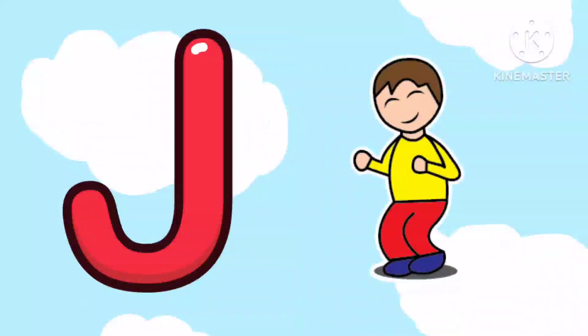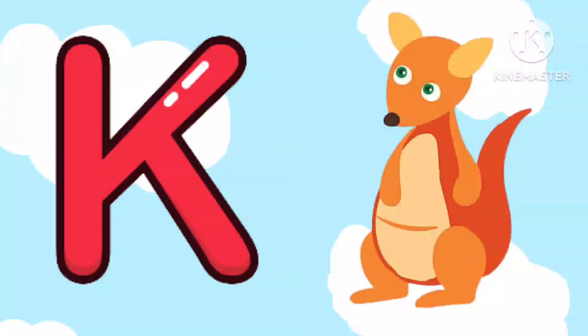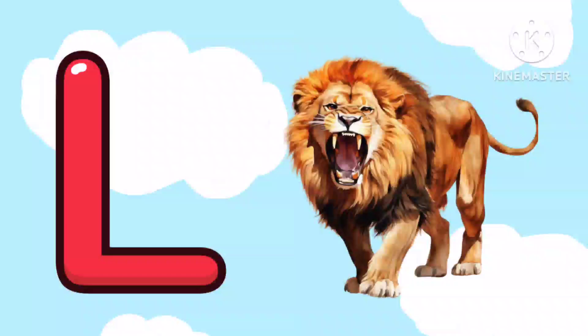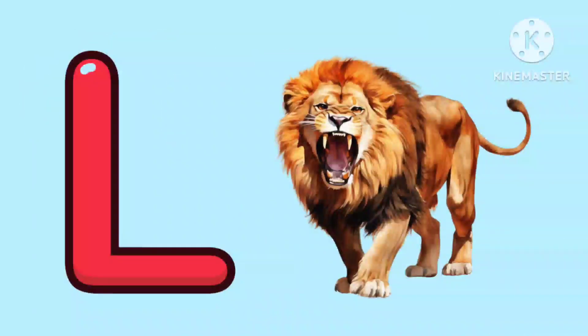J is for Jump, J, J, Jump. K is for Kangaroo, K, K, Kangaroo. L is for Lion, L, L, Lion.